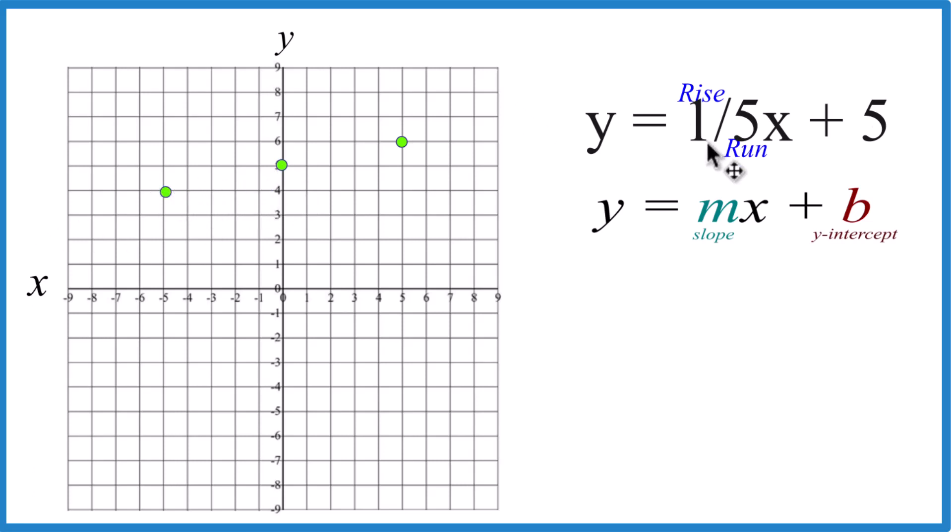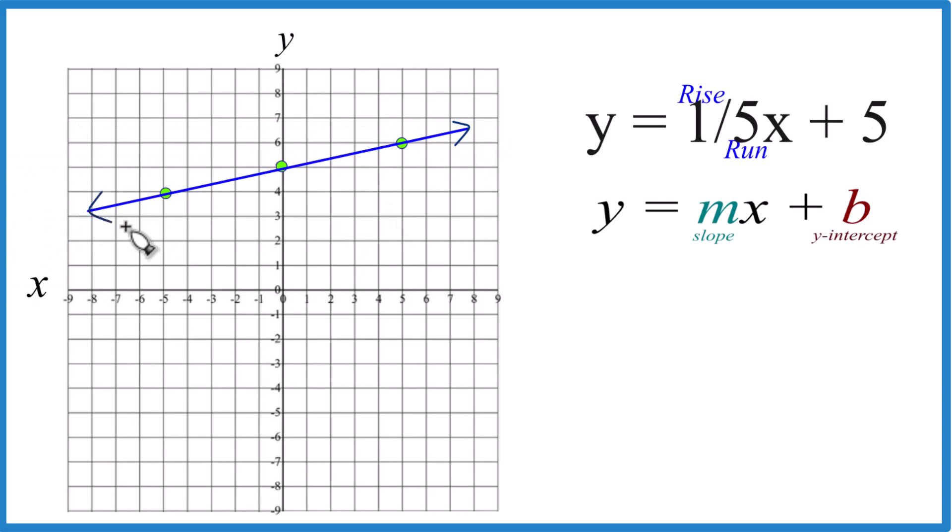And there you can see the line for y equals one-fifth x plus five. Let's put a line through that. Then we'll put arrows to show it goes to infinity, and that's the graph.